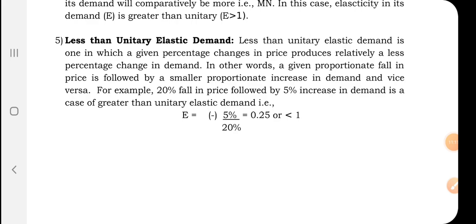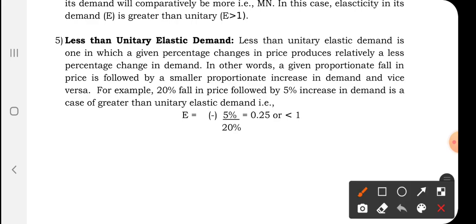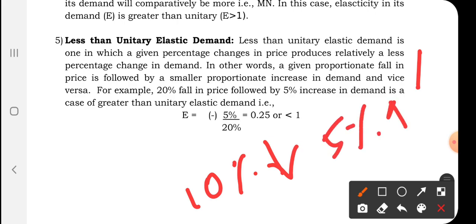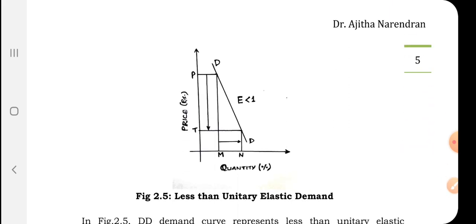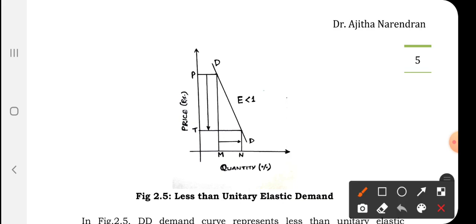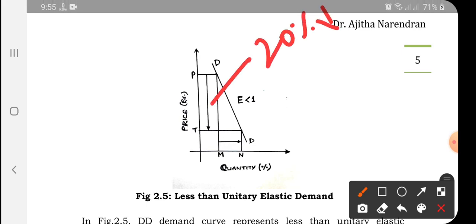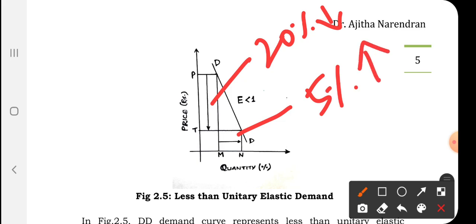The next degree is less than unitary elastic demand, the opposite of greater than unitary elastic demand. It is one in which a given percentage change in price produces a smaller percentage change in demand. For example, a 10 percent fall in price produces only a 5 percent rise in demand, giving E less than 1. In the graph, the arrow for the fall in price is comparatively bigger than the arrow for the increase in quantity demanded.